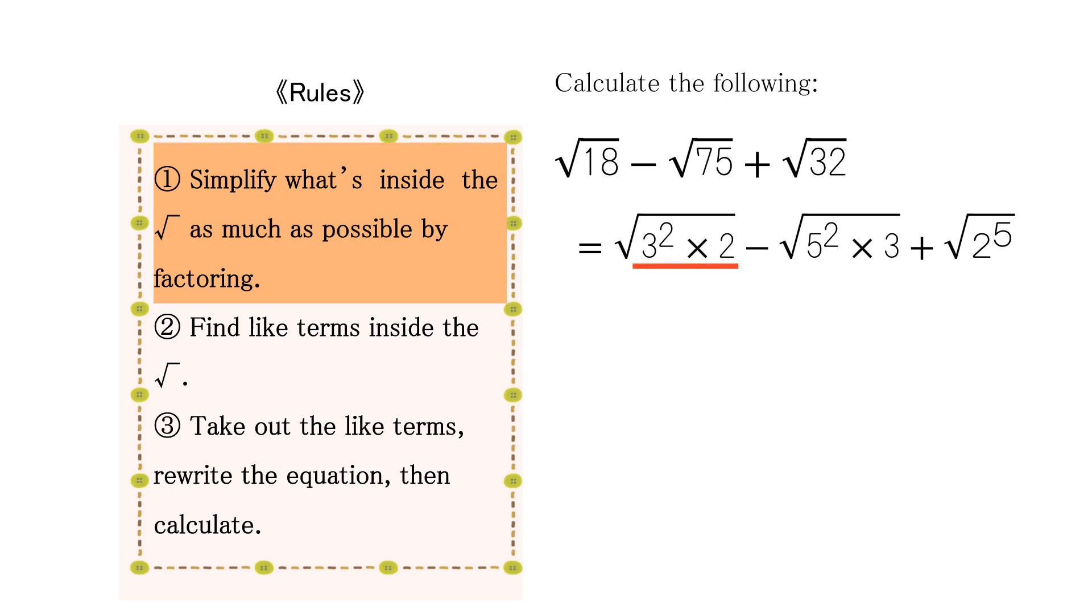Factoring 18 gives us square root 3 squared times 2. Factoring 75 gives us square root 5 squared times 3. Factoring 32 yields square root 2 to the fifth power.